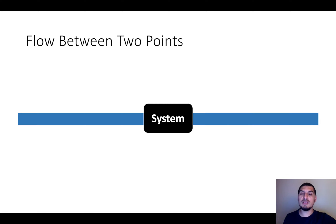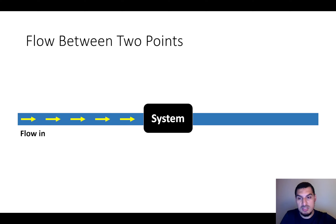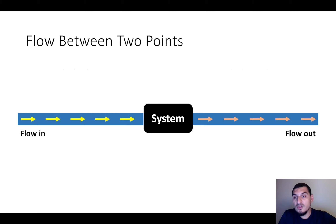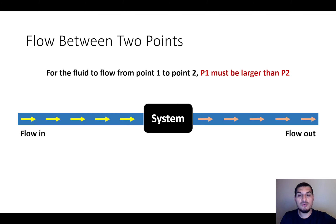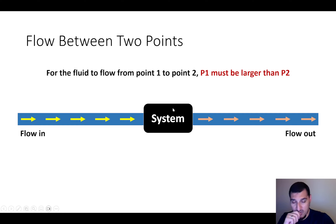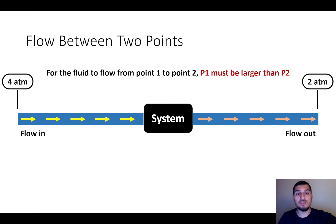Let's say this is our system. There is a pipe or tube providing flow into the system, and another pipe letting flow go out. So we have two flows: one flow in and one flow out — it's an open system. In order for flow to go from point 1 to point 2, through the system and out, there must be a driving force — something that forces the flow from one place to another.